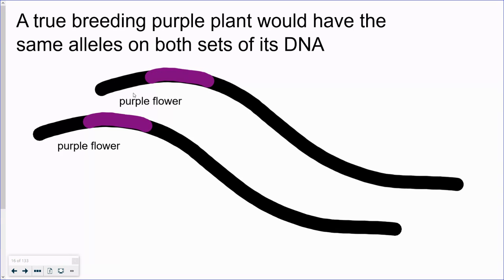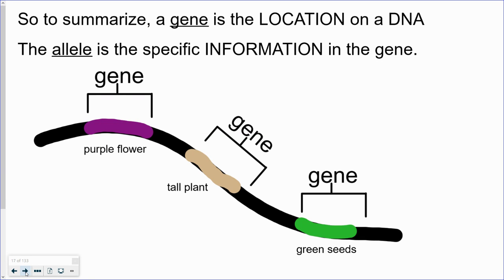So to summarize, a gene is the location on the DNA, and the allele is the specific code or information.